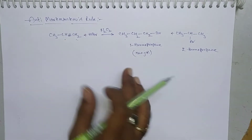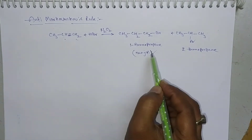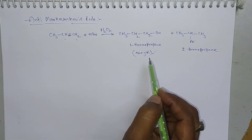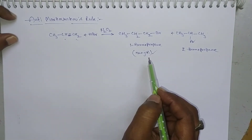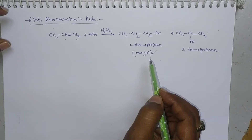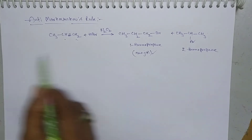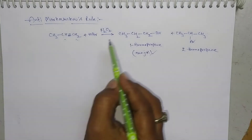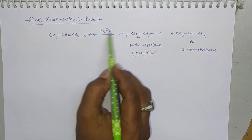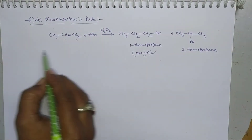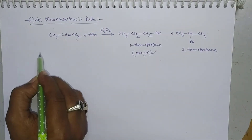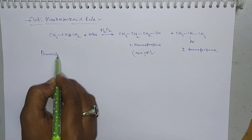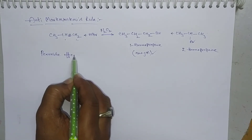In order to understand how this major product is obtained, let us look at the mechanism of this reaction. Remember, anti-Markovnikov's rule takes place only in the presence of peroxides. That's why this is also called the peroxide effect.